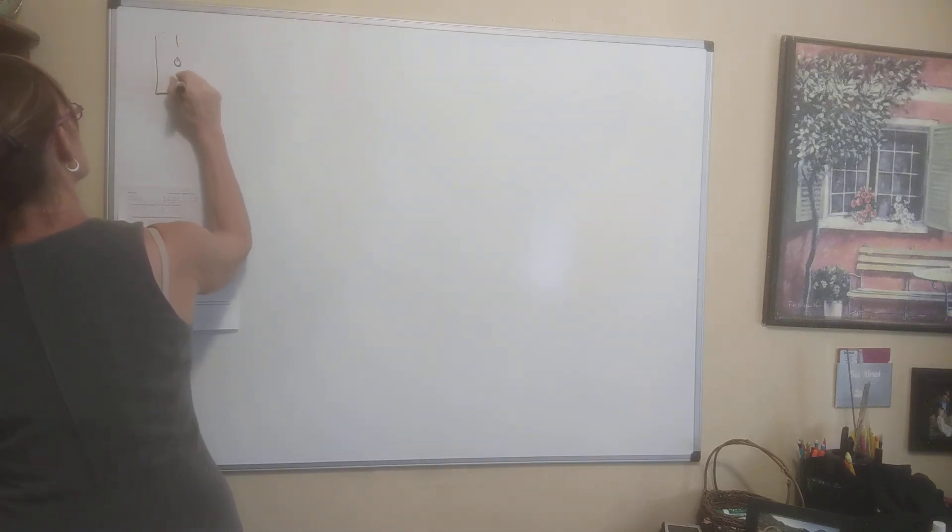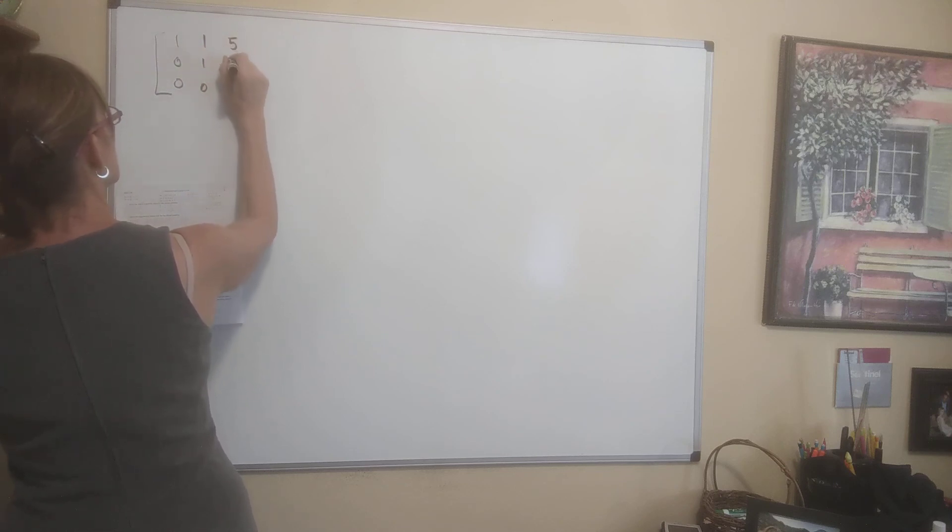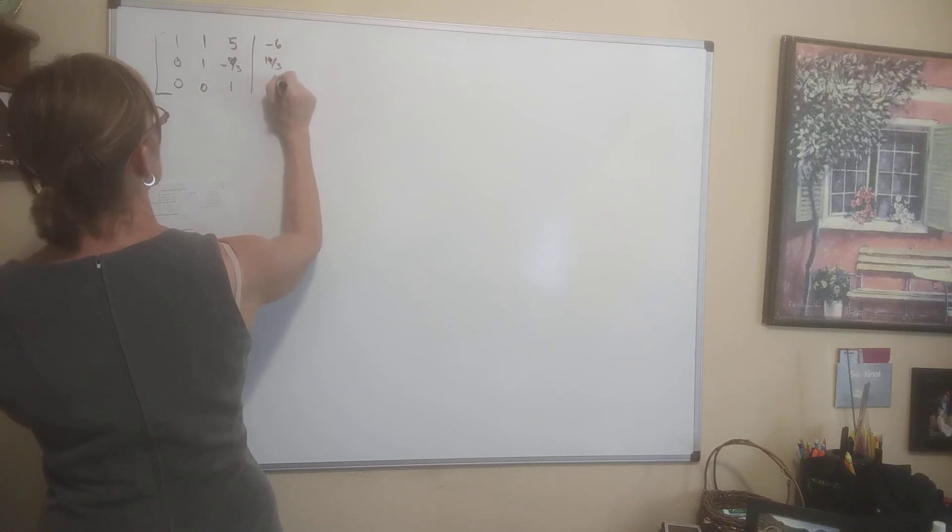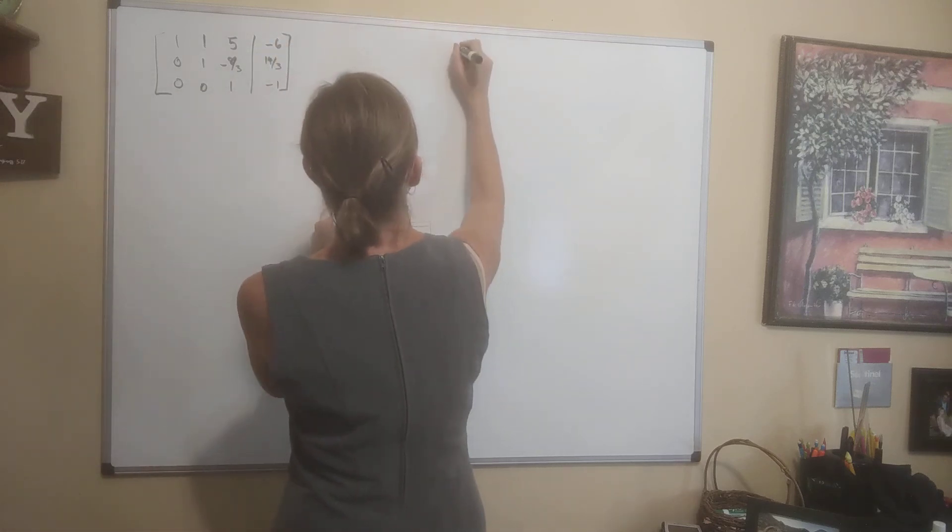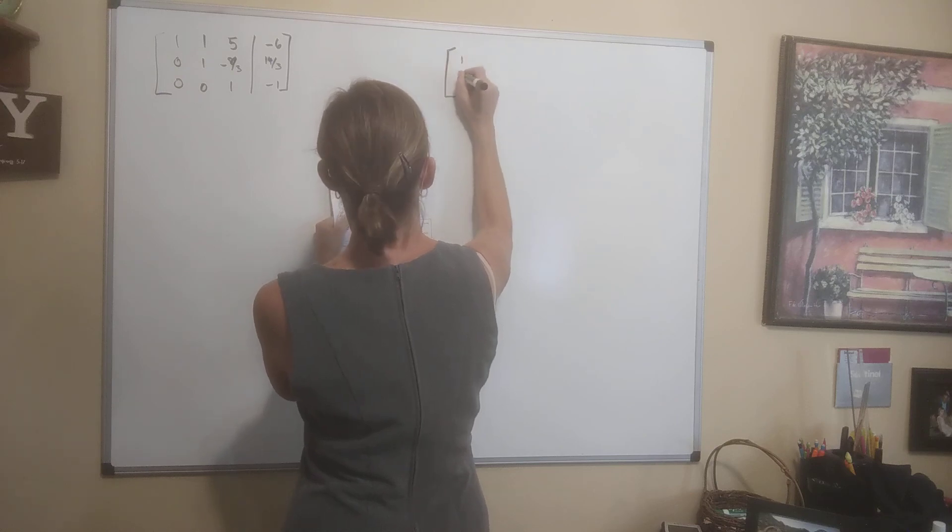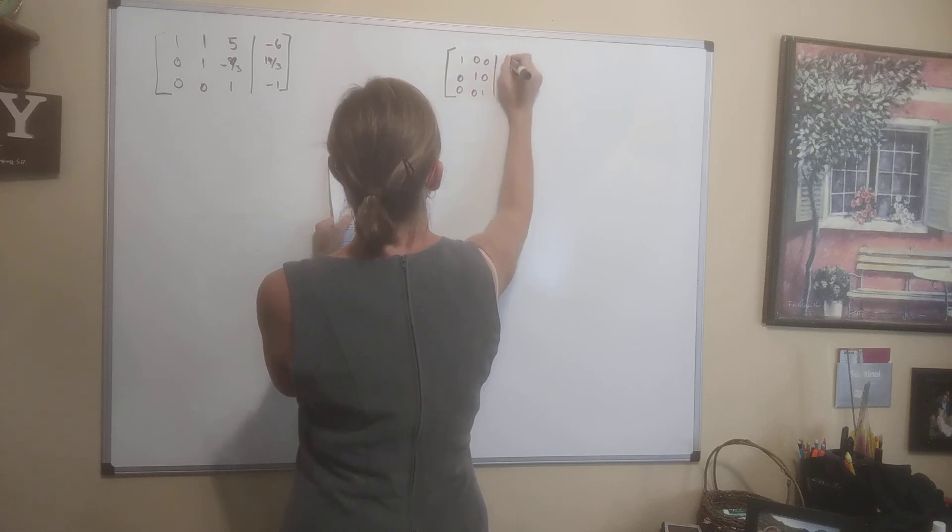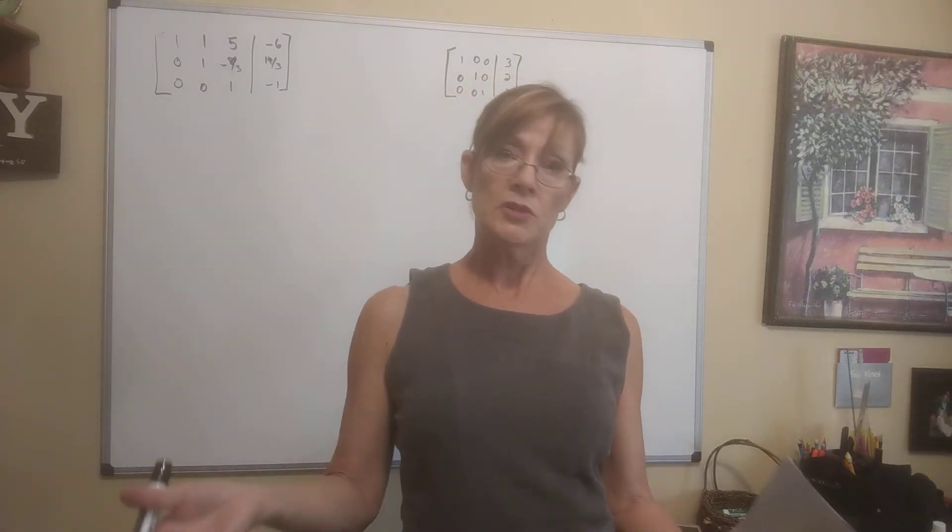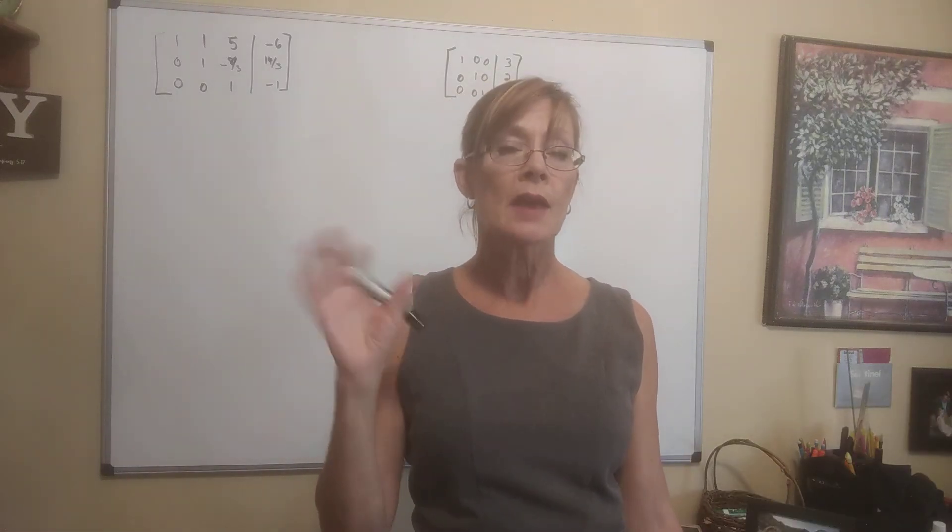Alright, here we go. So if we are given this augmented matrix that looks like this: 1, 0, 0, 1, 1, 0, 5, negative 8 thirds, 1, augmented with negative 6, 14, 3, negative 1. And then the second one they gave us was 1, 0, 0, 1, 0, 1, augmented with 3, 2, 1. Now they didn't tell us what variables go with these. So if they don't tell you, you decide what they want to be. I'm going to choose X and Y and Z. That's what I'm going to choose.